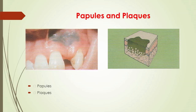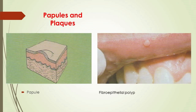Papules are solid lesions raised above the skin surface that are smaller than 1 cm in diameter. Plaques are solid raised lesions over 1 cm in diameter — they are essentially large papules. A patch of papules or nodules is called a plaque. Plaques are common in people with psoriasis.